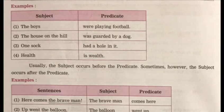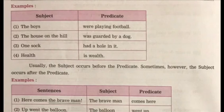Who guarded the house on the hill? So 'the house on the hill' is your subject and the rest of the sentence is your predicate. 'One sock had a hole in it.' Who had a hole? One sock. So 'one sock' is your subject and 'had a hole in it' is your predicate.